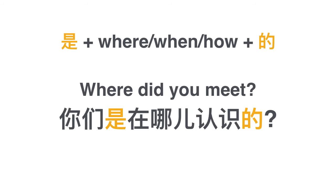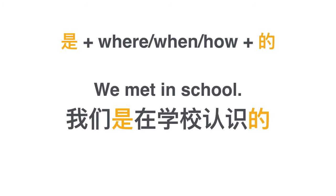Where did you guys meet? 你们是在哪儿认识的. 认识 means to meet, 在哪儿 means where, so 是在哪儿认识的 is 'where is it that you guys met.' The answer: we met in school — 我们是在学校认识的. Notice how nicely the question and answer correspond to each other — you just change 你们 to 我们 and replace 哪儿 (where) with 学校 (school). 你们是怎么认识的 / 我们是在学校认识的 — these two sentences correspond very nicely.